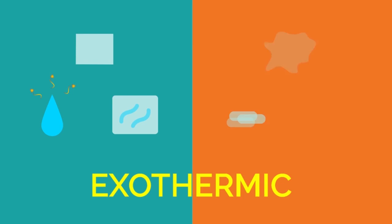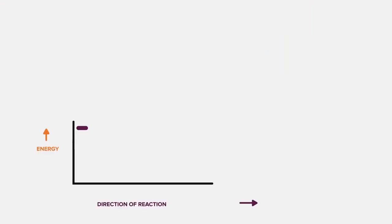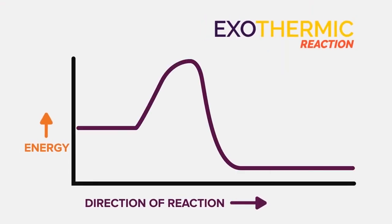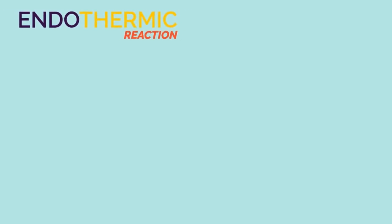Similarly, when condensation happens, the gas is going to liquid — again bonds need to be made, so energy is given out. So freezing and condensation are both exothermic. Because in exothermic reactions energy is given out to the surroundings, the energy of the reactants is higher than the energy of the products, and the energy curve for exothermic reactions looks like this.